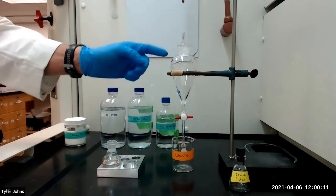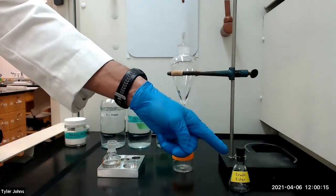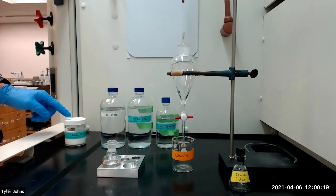After the third extraction, we will transfer the crude ester to a 25-milliliter Erlenmeyer flask and dry over anhydrous sodium sulfate for 10 to 15 minutes.